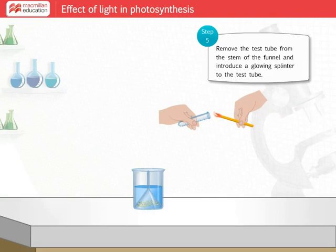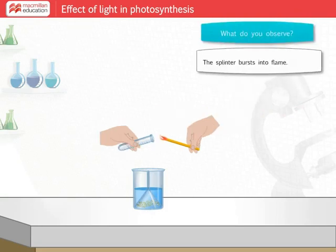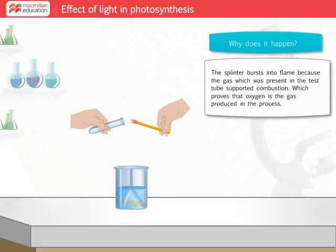What do you observe? The splinter bursts into flame. Why does it happen? The splinter bursts into flame because the gas which was present in the test tube supported combustion, which proves that oxygen is the gas produced in the process.